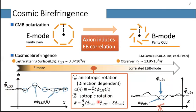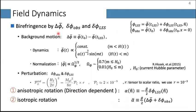The difference between the average field value at the last scattering surface and the field value of the observer results in isotropic rotation of the polarization angle. This isotropic rotation has two components: the first comes from the background dynamics, and the second comes from the fluctuation at the observer. In this way, we can relate the axion field value to the rotation angle. The background dynamics also contributes to the fluctuations at the last scattering surface.